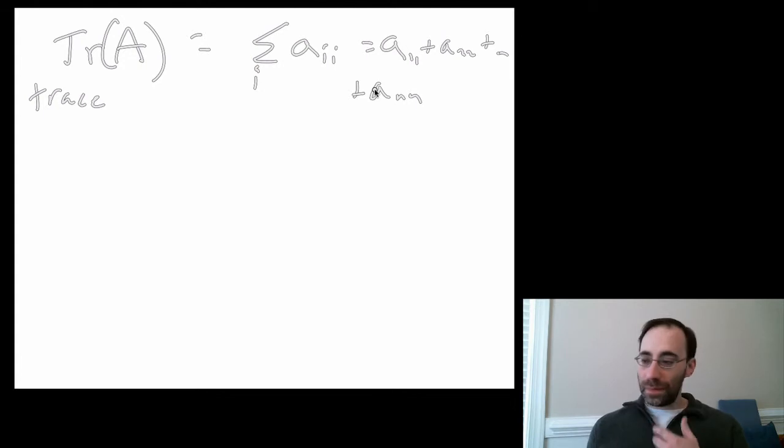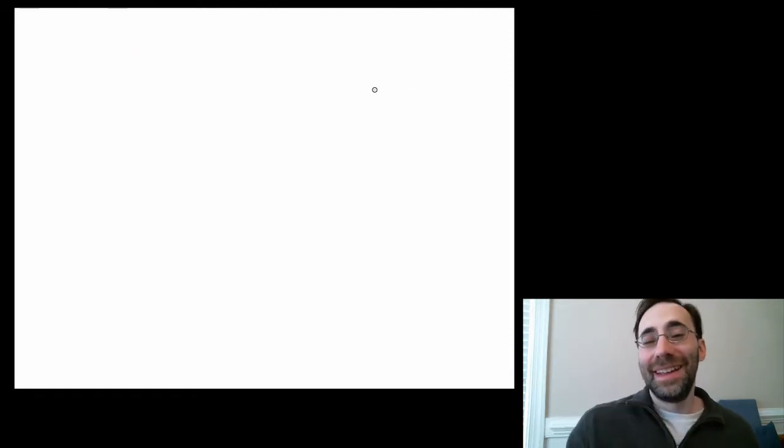That's it. The trace equals the sum of the eigenvalues of a matrix, and that's why you see it sometimes, but we'll talk about that maybe a little bit more when we get to eigenvalues in a couple lectures from now. So that's it for trace. That was the easy part.